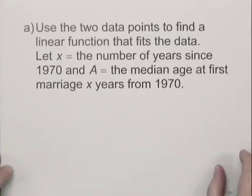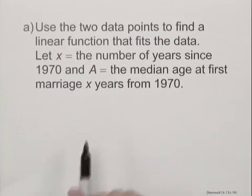What are we asked to find? Use the two data points to find a linear function that fits the data. We'll let x equal the number of years since 1970 and A equal the median age at first marriage x years from 1970.